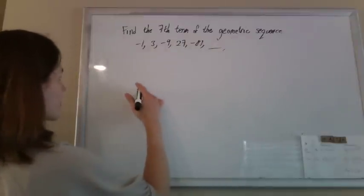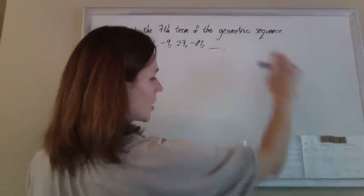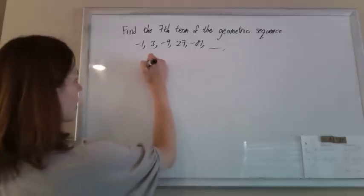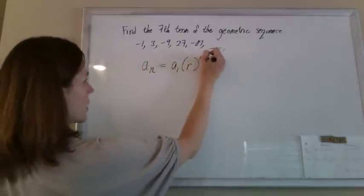But she wants you to use a formula, so fine, we will. Which formula do we use? It's geometric and we're looking for the nth term. There's no sum involved, so don't go there. So it's just the nth term is the first term times the common ratio, n minus 1 times.